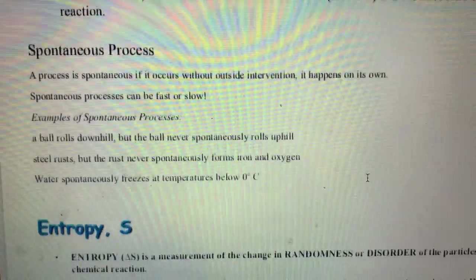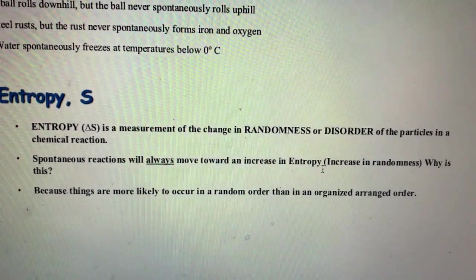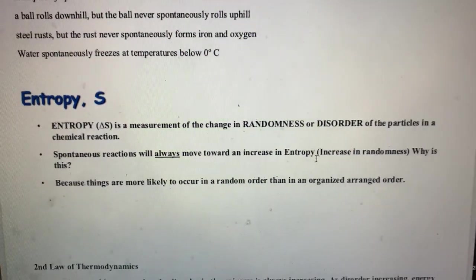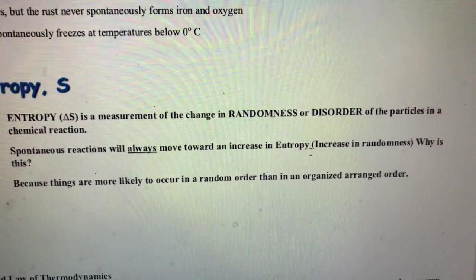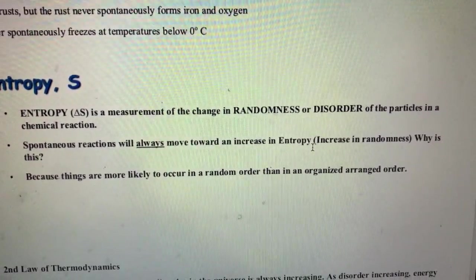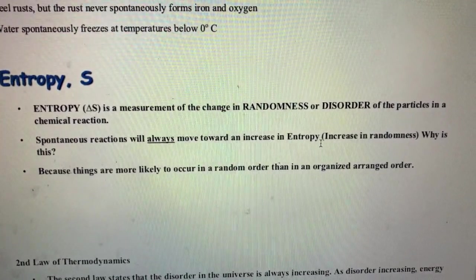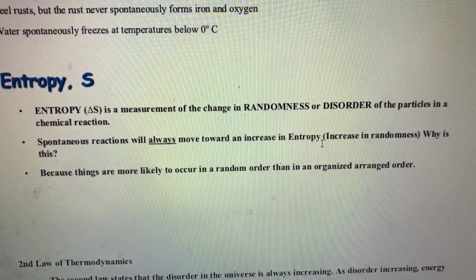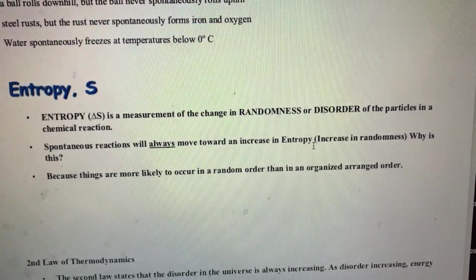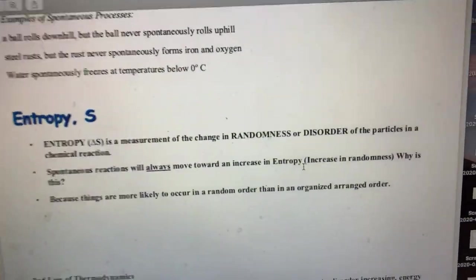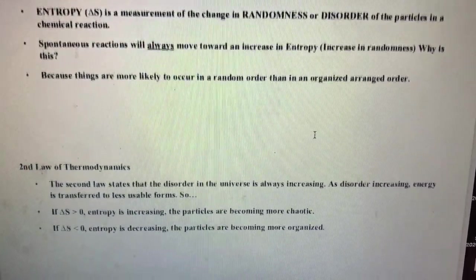Let's take a look at entropy. Entropy is abbreviated as S, usually seen as delta S because of the change in entropy. It's a measurement of the randomness or the disorder of the particles in the reaction. Spontaneous reactions will always move towards an increase in entropy or randomness, and this is due to something called the second law of thermodynamics.